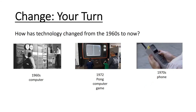Now it's time for you to have a go. How has technology changed from the 1960s to now? I've given you some examples: a 1960s computer, the first commercially available computer game which is Pong in 1972, and an original mobile phone — yes, we are aware it is massive. You need to explain what technology was like before, in the 1960s, compared to what it's like now.